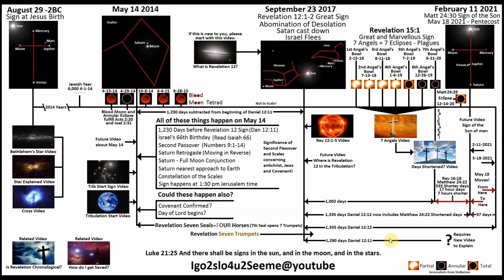Now Daniel 9:27 says that it's a seven year period — it's not a seven year plus thirty day period. And if we take 1290 days and add to it to get seven years, that's 1230 days. So that is what we subtract from this point in time, right here, and that takes us to May 14th. Now May 14th is very interesting. First of all it lets us fulfill these two verses out of the Bible. It's also Israel's 66th birthday. It's Second Passover. There's a bunch of stuff all associated with this day.